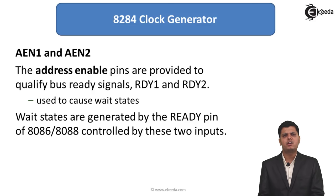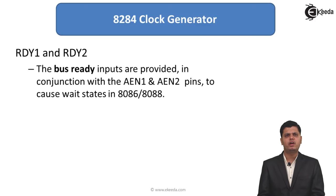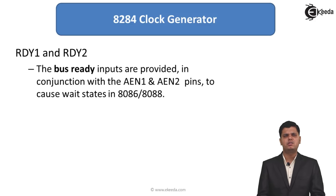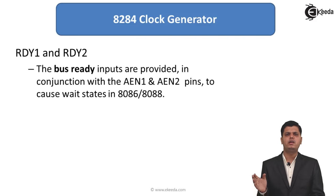Wait states are generated by the ready pin of the 8086 controlled by these two inputs. The next pins are RDY1 and RDY2, which generate wait states. The burst ready inputs work in conjunction with AEN1 and AEN2 to cause a wait state. RDY1 and RDY2 signals are accessed along with AEN1 and AEN2, allowing the 8284 to determine whether the required memory data is ready, and the burst ready signals are sent accordingly.